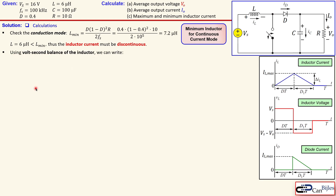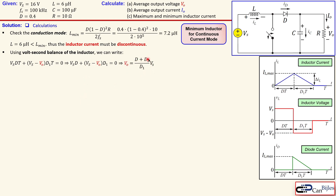Using the volt-second balance of the inductor, we can write the following equation by looking at the graph. For the first part in duty interval d, the voltage of the inductor is VS, so VS times d·T. The next part is (VS minus VO) times d1·T, and that adds up to zero. This is the volt-second balance for the inductor. Rewriting and dividing out T, you get an expression for the output voltage ratio that is also dependent on d1, which was not the case in continuous current mode. Let's call this equation number one.